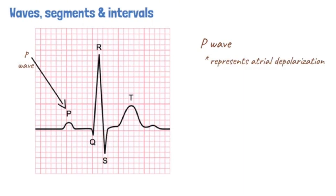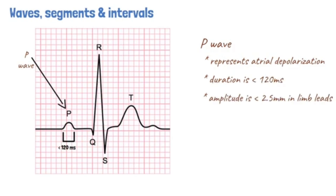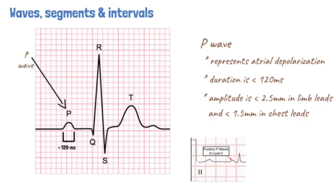The normal P wave is generally less than 120 ms in duration, that is less than 3 small squares. The amplitude should be less than 2.5 mm in the limb leads and less than 1.5 mm in the chest leads. A normal P wave has a positive deflection in lead 2 and a negative deflection in lead AVR.